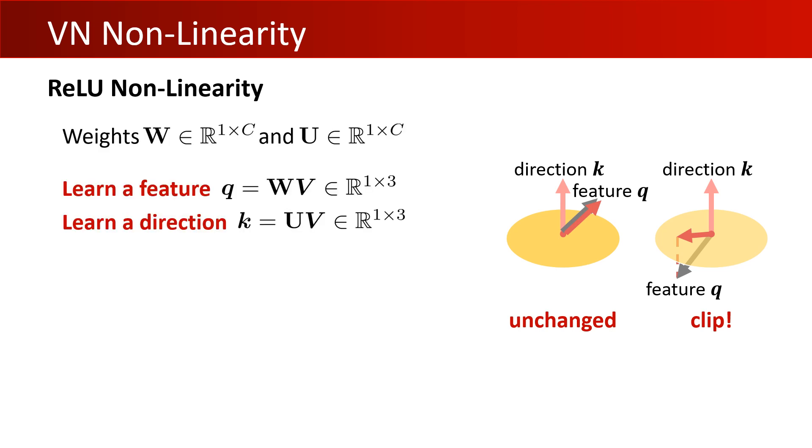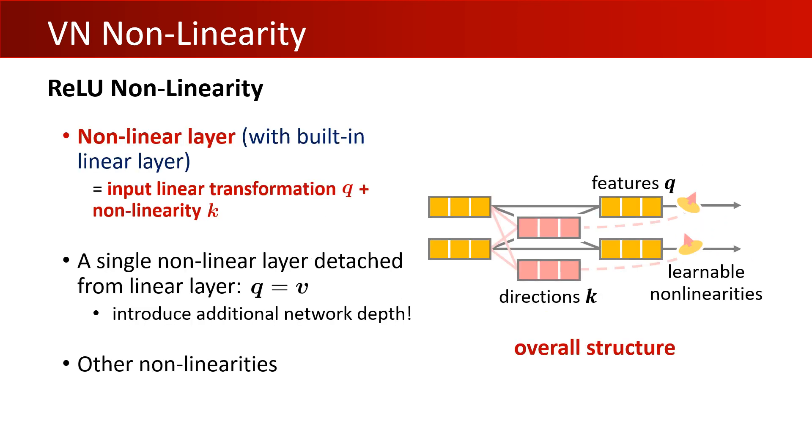More formally, given an input vector-list feature V, for each output vector neuron v', we predict the feature vector q and the direction vector k. q is then clipped if it points to the negative half space defined by k, or unchanged if it points to the positive half space. Other types of split-case functions, like the leaky ReLU, follow immediately from this definition. For more details, please refer to our paper and the supplementary material.